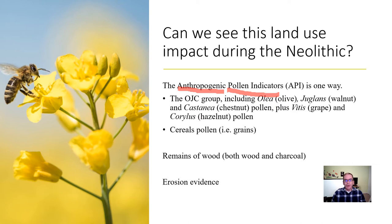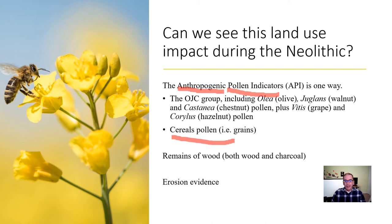There are lots of different types of pollen you can look at. One is called the OJC group: olea (olive), juglans (walnut), and castanea (chestnut). Those are plants that people grew on purpose to eat. You also get the Vitis, which is the grape, and Corylus, which is the hazelnut. When you see that type of pollen in large amounts, it usually indicates that people are growing something specific to eat. You also get cereal pollen — wheat, barley, oats, rye, and so on — so you can see the pollen records in the soil.